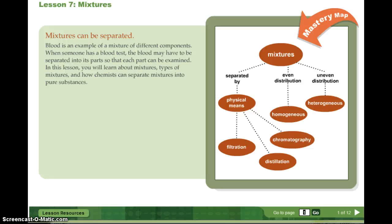Hi chemistry, Mrs. KJ here going over 1.07 mixtures. Mixtures can be separated. Blood is an example of a mixture of different components. When someone has a blood test, the blood may have to be separated into its parts so that each part can be examined. In this lesson you will learn about mixtures, types of mixtures, and how chemists can separate mixtures into pure substances.